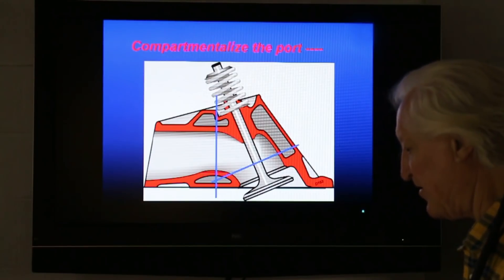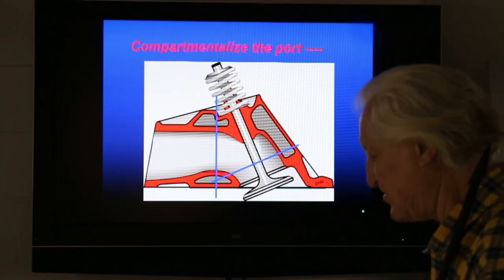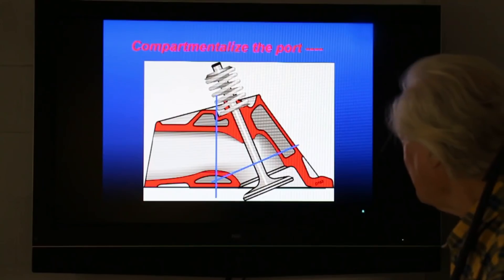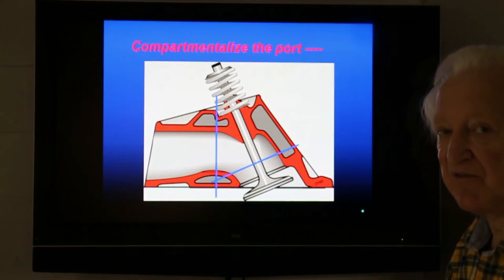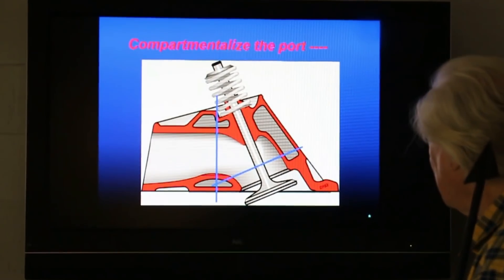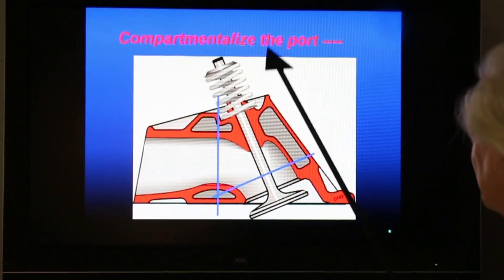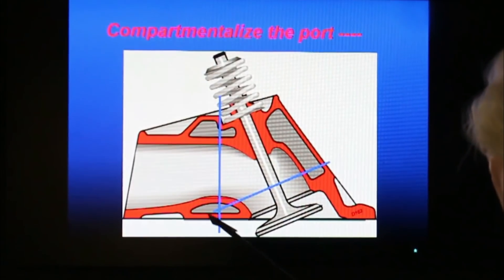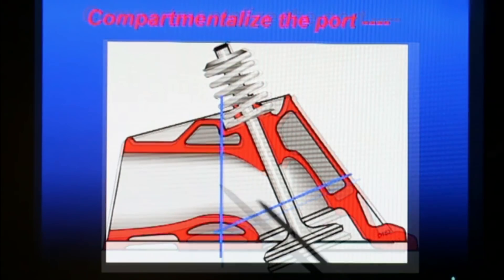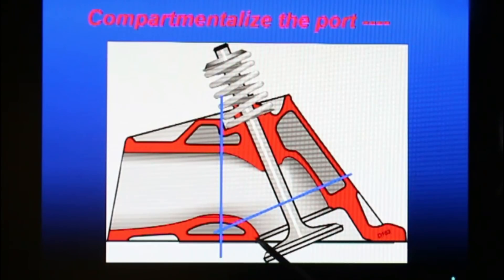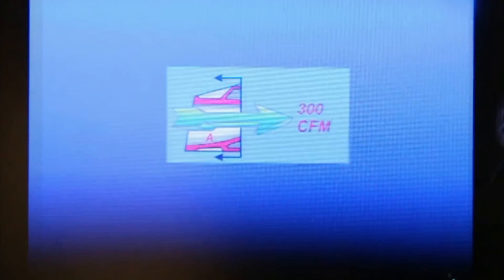That would be about a 1960 something or other head. It was a small chamber head and it was considered to be one of the higher performance heads of the day. Now, what I've done here is compartmentalized it. What we're going to do is we're going to cut through here and here and flow this, this and this separately to see how much they flow. So let's move along and see what that is.